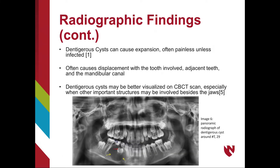Dentigerous cysts can cause expansion of the cortical bone, which is often painless unless there is infection of the involved tooth. There is often displacement of the involved tooth, adjacent teeth, and the mandibular canal with dentigerous cysts, which may be better visualized on CBCT scans, as CBCT gives better visualization of dentigerous cysts and surrounding structures.